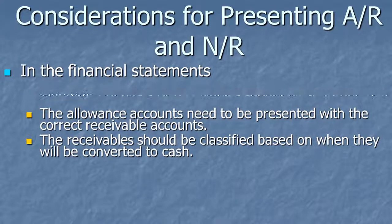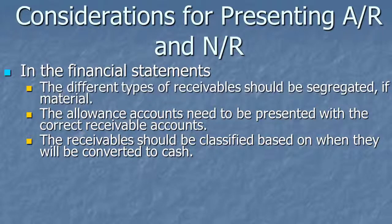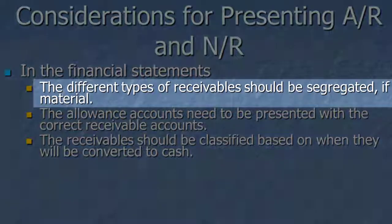There are a lot of things we have to think about when reporting accounts receivable and notes receivable in the financial statements. You should have accounts receivable in one line item and notes receivable in a separate line item, unless it's immaterial. Immaterial means a normal rational investor would not change his or her decision by having them broken out versus lumped together. So if you have a million dollars of accounts receivable and a $20,000 note, you can just lump them together.